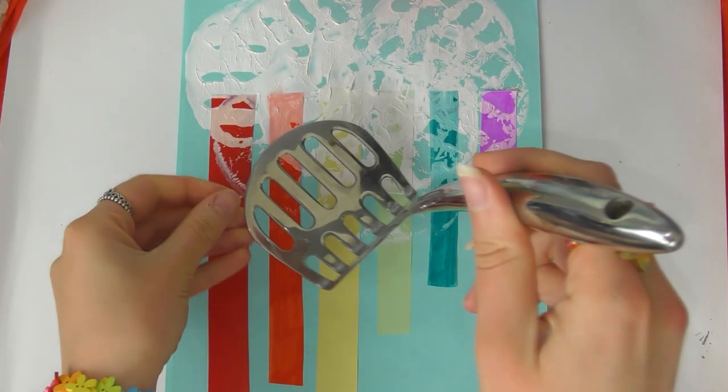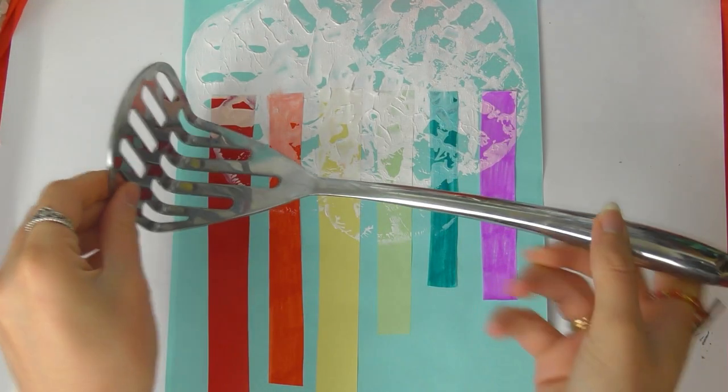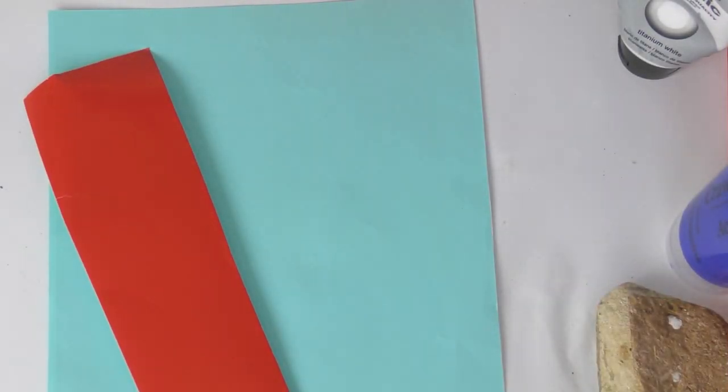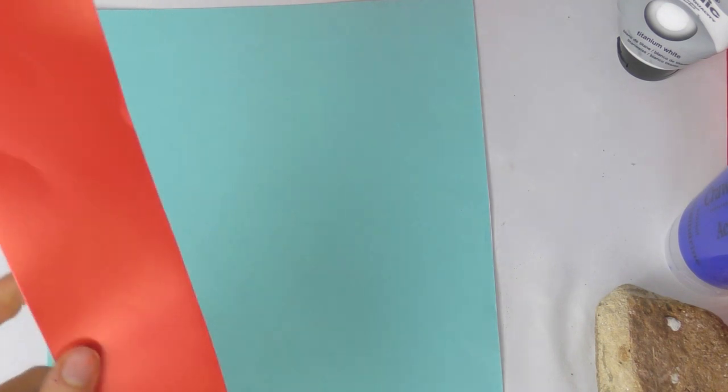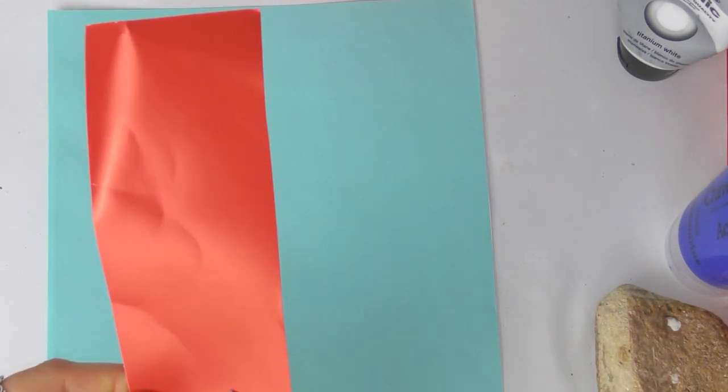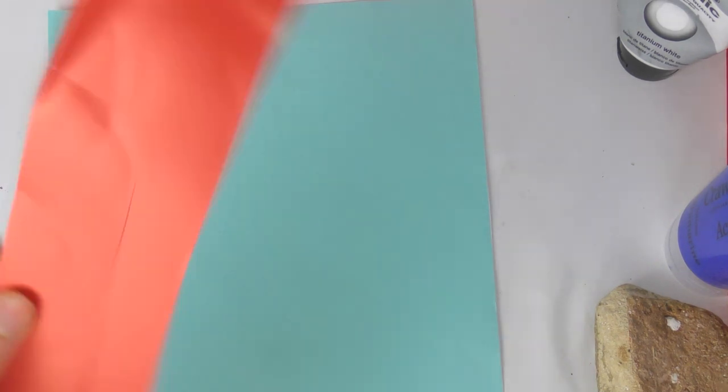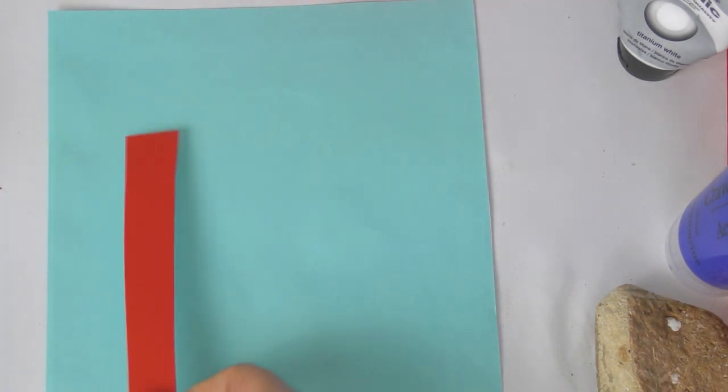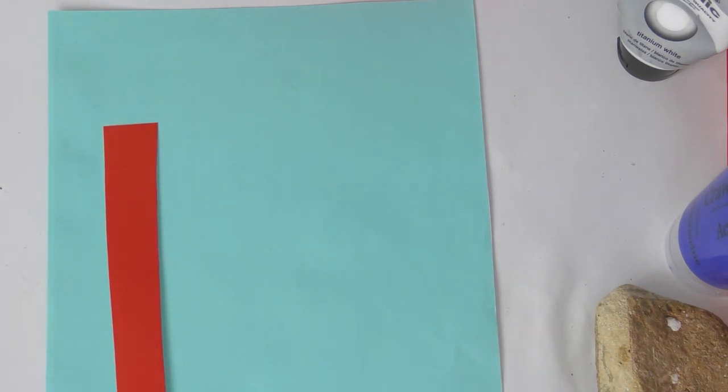Finally I'm going to show you how you can make a rainbow cloud picture with a potato masher. What you need to do is find a blue piece of paper. If you don't have a blue piece of paper you can color a white piece of paper blue to make a nice sky. Then you need to cut seven strips, one for each of the rainbow colors. So I'm starting with red.